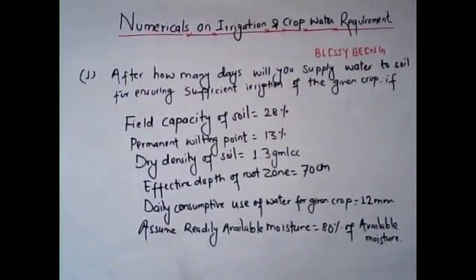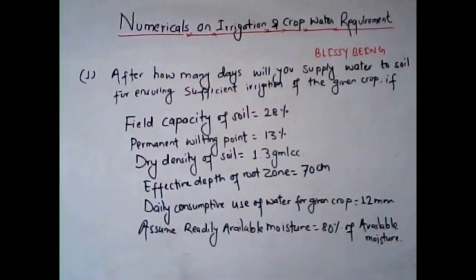Today, friends, we will be going through the numerical aspect of Chapter 2, that is Irrigation and Crop Water Requirement. In Part 1, we dealt with the theoretical aspect of irrigation and crop water requirement, and now we'll be going through the numerical portions of this chapter.